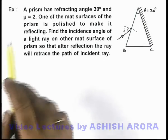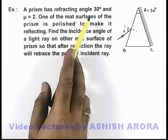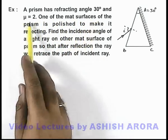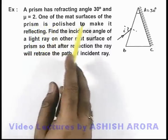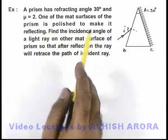In this example, we are given that a prism has a refracting angle of 30 degrees and its refractive index is 2. It is given that one of the matte surfaces of the prism is polished to make it reflecting.